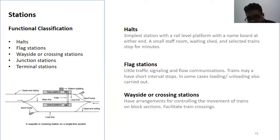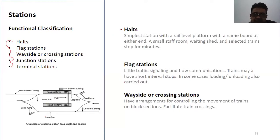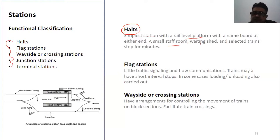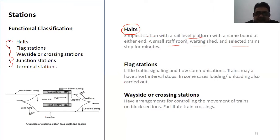Now we go to types of stations — these are different types of functional classification. One is halt stations. Halt stations are simple stations with rail-level platforms. They are small, with waiting chairs, selective train stops, and selective times. Trains stop only for a few minutes for basic facilities.